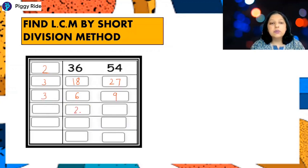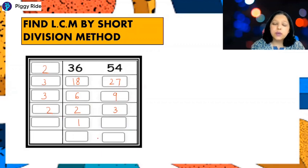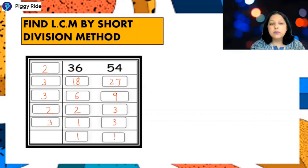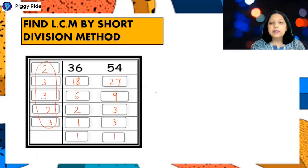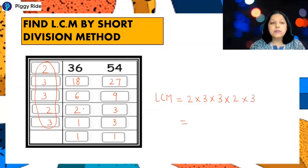Divide again by 3: 3 divides 6 to give 2 and 3 divides 9 to give 3. Now divide 2 by 2 to get 1; 3 is not divisible by 2, so write 3 as it is. Divide 3 by 3 to get 1. Continue until the last row is all 1s. Now multiply all the divisors on the left side: 2 × 3 × 3 × 2 × 3.